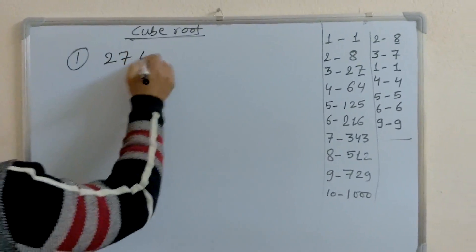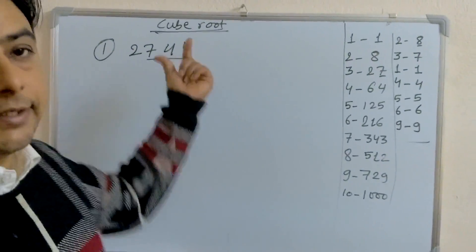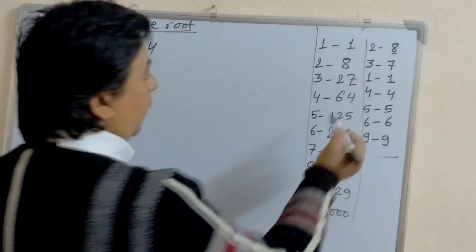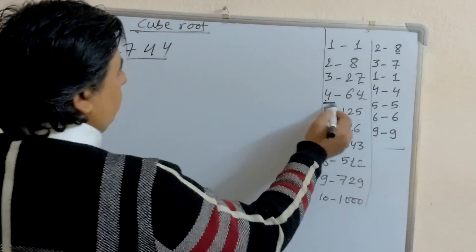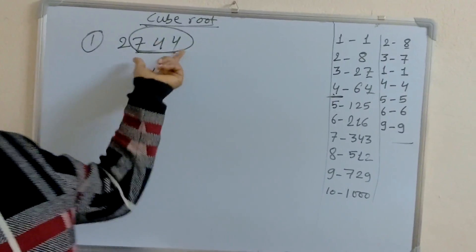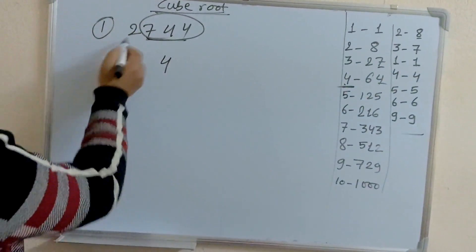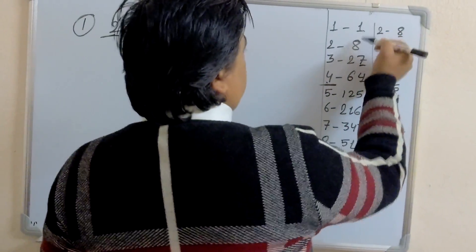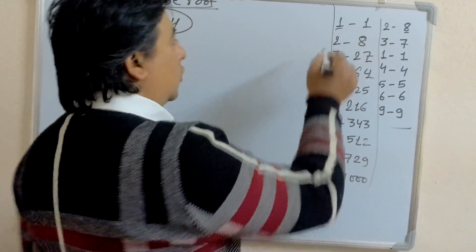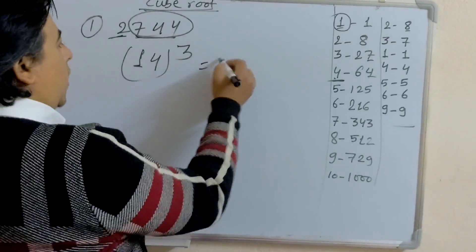Let's take the first example: 2744. To find the cube root, take the last 3 digits and see the last digit — it is 4. The last digit 4 corresponds to 4 cube, so write 4. Now ignore these 3 digits and look at the remaining number: 2. The number 2 lies between 1 and 8, so take the smallest one — that is 1 cube, so write 1. Therefore, the cube root is 14. Indeed, 14 cubed equals 2744.